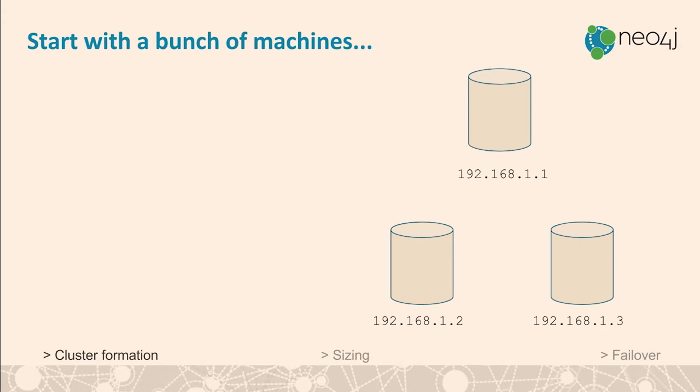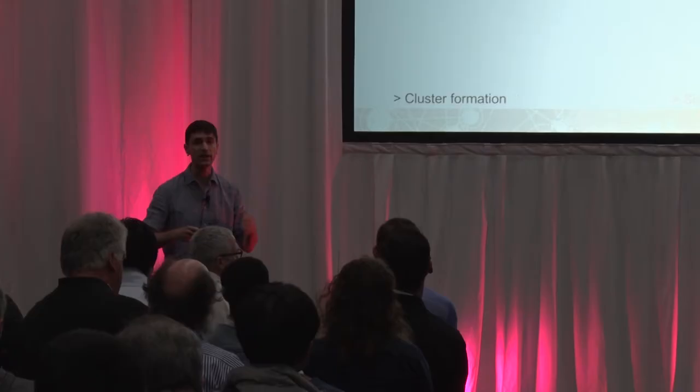We'll start with the assumption that you have a few machines with IP addresses and have downloaded and installed Neo4j. We're not going to touch configuring a standalone Neo4j instance — we'll assume you've already configured your garbage collection, memory, and page cache. We're going to focus on causal clustering alone, specifically the core cluster.